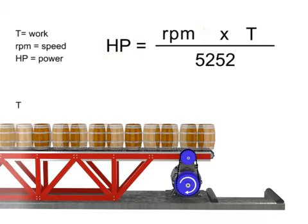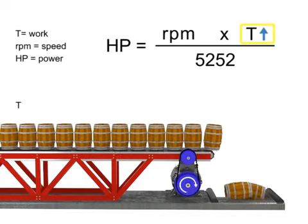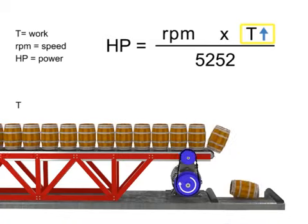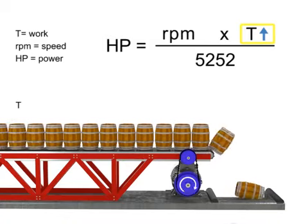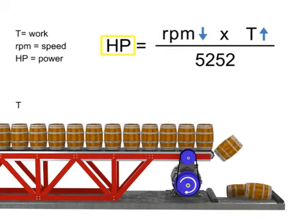Let's say we want the horsepower of our motor to remain constant but wish to increase the torque. If torque increases, the speed of the conveyor decreases so that the horsepower required of the motor remains constant.